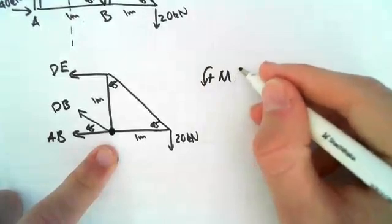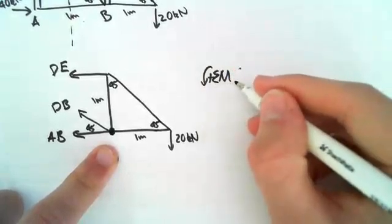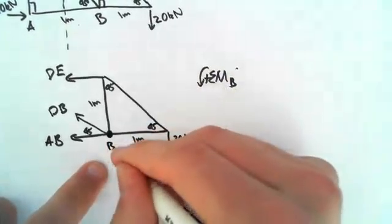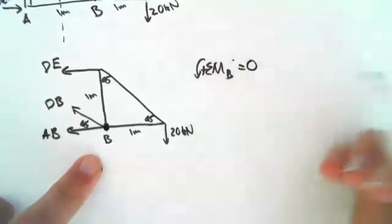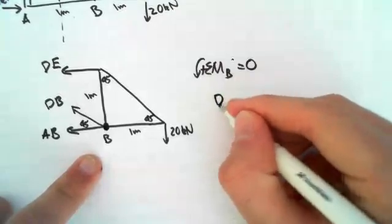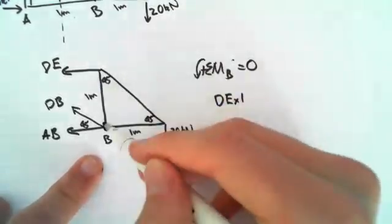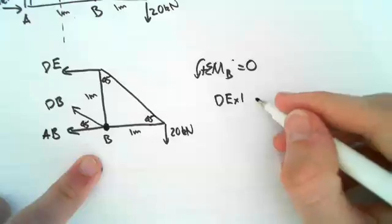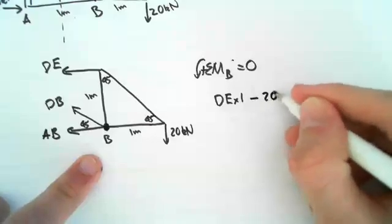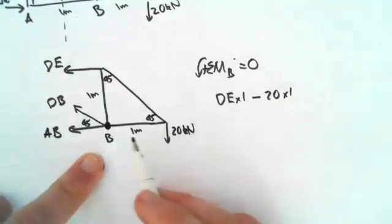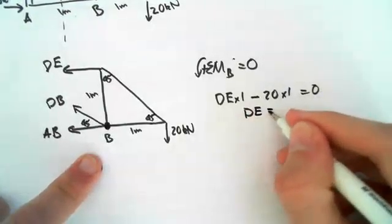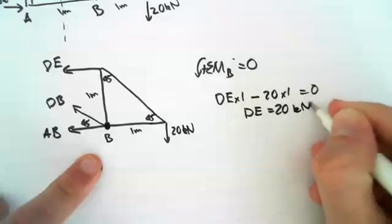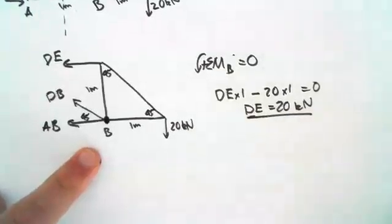Anticlockwise is positive. The sum of the moments about point B equals zero. So therefore we have DE times 1, since it's 1 meter away from this, minus 20 times 1, since it's 1 meter away from here, equals zero. So then we get DE equals 20 kilonewtons. So that's the force in member DE.